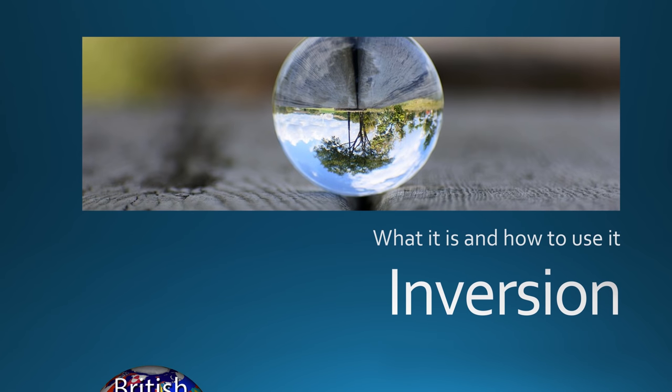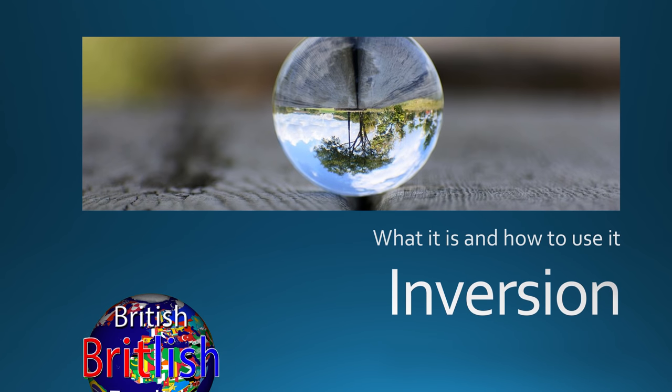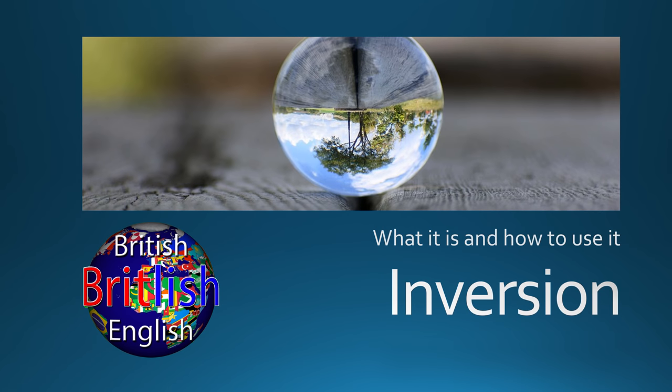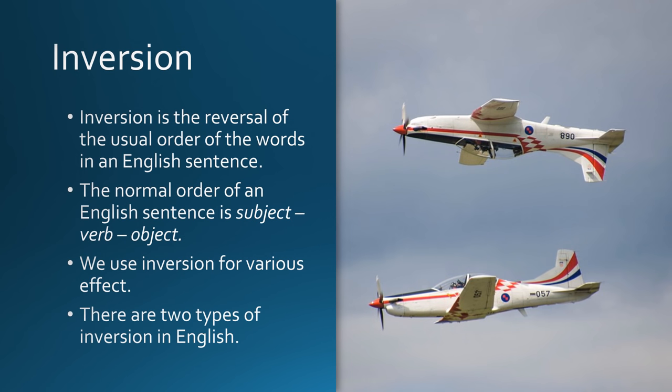Inversion: what it is and how to use it. Inversion is the reversal of the usual order of the words in an English sentence. The normal order of an English sentence is subject, verb, object. We use inversion for various effects. There are two types of inversion in English.